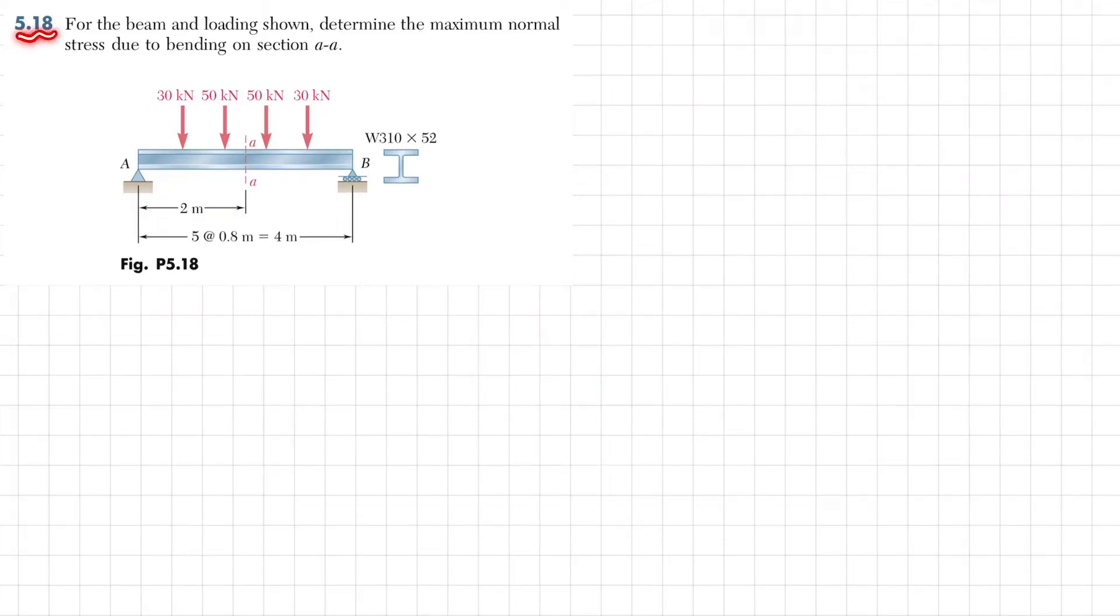Welcome back. Problem 5.18. The statement is: for the beam and loading shown, determine the maximum normal stress due to bending on section AA. You can see this is a beam AB where different point loadings of 30 kN, 50, 50, and 30 kN are acting. The distance between each load is given as 0.8 meters. This is the cross section of the beam, W310 by 52, and we have been asked to find the maximum stress at section AA.